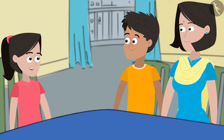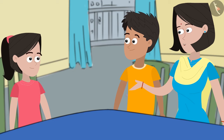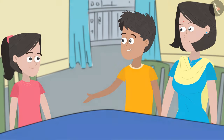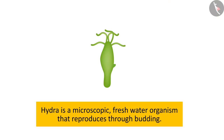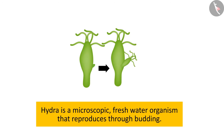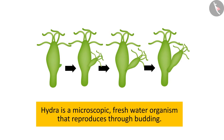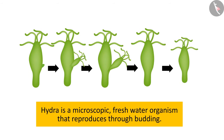You mean the reproduction takes place at other body parts than the reproductive organs. Yes, you got it right. But how? Let us take the example of hydra. Hydra is a microscopic fresh water organism that reproduces through budding. Under favourable conditions, a bud starts developing on it. The bud grows tentacles like the parent hydra. Eventually, the bud starts detaching from the parent organism. Once the bud is completely detached from the parent body, a new, independent and identical hydra is formed.